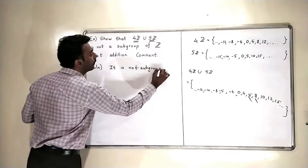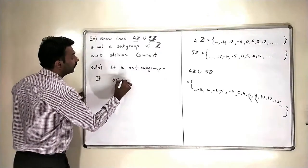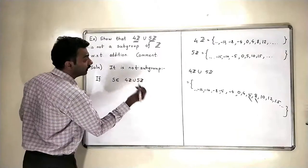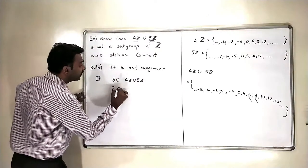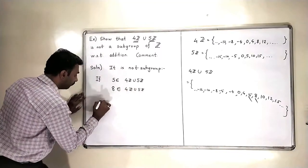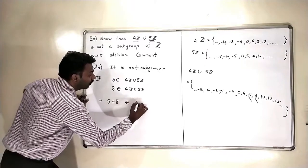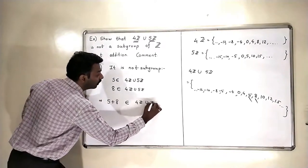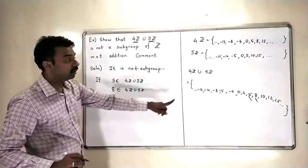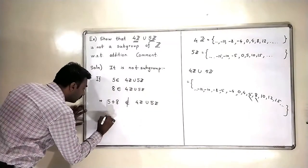Because if I take an element 5 in the set which is 4Z union 5Z and let us take some other element in this set. Suppose I take 8 in this set which is also in 4Z union 5Z, then does 5 plus 8 belong to the set? Yes or no? So the answer is no. 4Z union 5Z, 5 plus 8 which is 13 does not belong to the set because 13 is not there in the set 4Z union 5Z. So this means the closure fails.